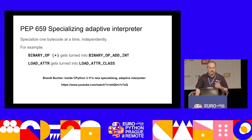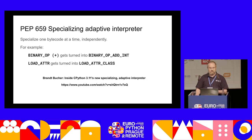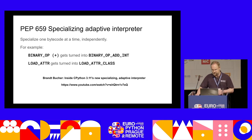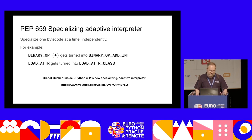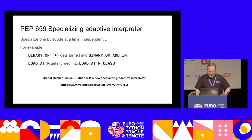Another example is LOAD_ATTR, which loads an attribute. A specialization is LOAD_ATTR_CLASS, where we know the object we're looking up on is a class — we check which class it is, since it's almost certainly the same as last time, and we can cache the result. If you're interested in more detail, Brandt Bucher's talk from PyCon US covers this thoroughly in a full half-hour.